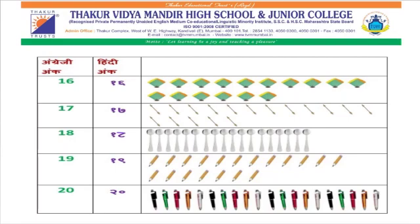अंग्रेजी में 17, Hindi में १७ (satrah). कुल गिनते हैं: 1, 2, 3, 4, 5, 6, 7, 8, 9, 10, 11, 12, 13, 14, 15, 16, 17. कुल 17 पतंगे।